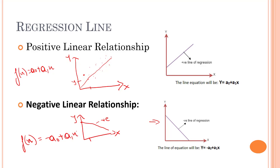That's it for the equation of univariate linear regression and the different kinds of regression lines. In our next video, we'll learn about how to determine this straight line.